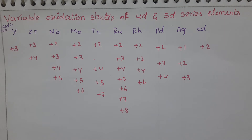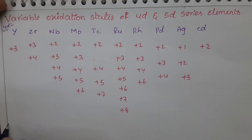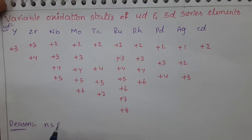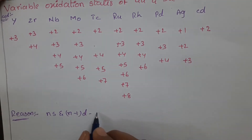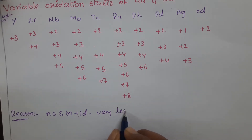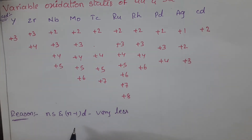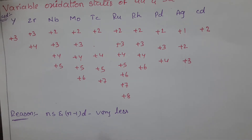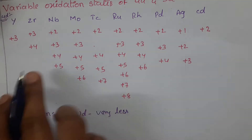So these are the variable oxidation states shown by the 4d series elements. The reason behind showing variable oxidation states is that the energy difference between the ns and (n-1)d orbitals is considerably less. The energy difference between the valence shell s orbital and the penultimate shell d orbital is very small, so both sets of electrons participate in bond formation. That is why 4d series elements show variable oxidation states.